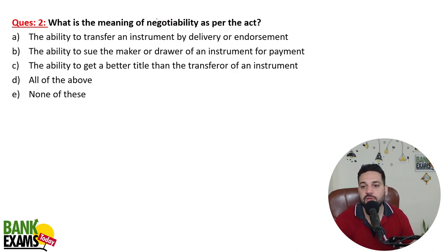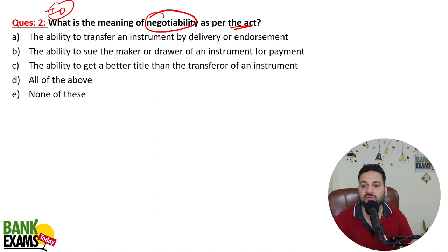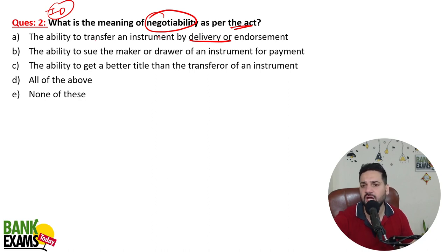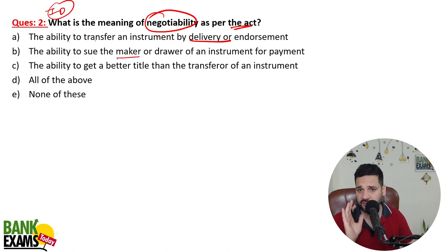What is the meaning of negotiability as per the Negotiable Instruments Act? This is an important question. Negotiability means the ability to transfer an instrument by delivery — for example, a bearer cheque can be negotiated by physical delivery. It also means the ability to sue the maker. If a cheque bounces, you can sue the person in court under Section 138.